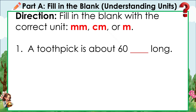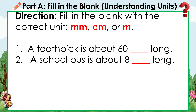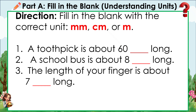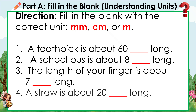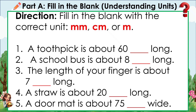1. A toothpick is about 60 blank long. 2. A school bus is about 8 blank long. 3. The length of your finger is about 7 blank long. 4. A straw is about 20 blank long. 5. A door mat is about 75 blank wide.